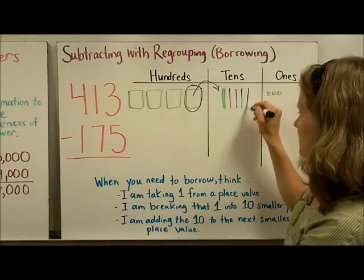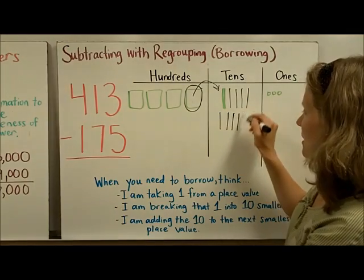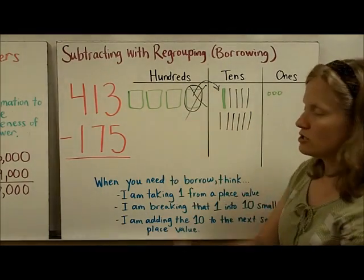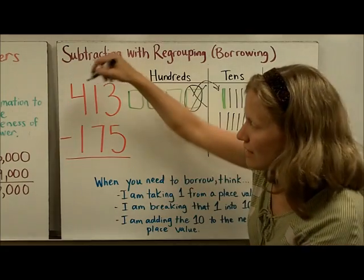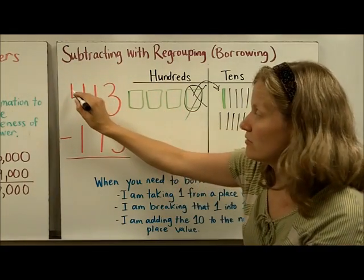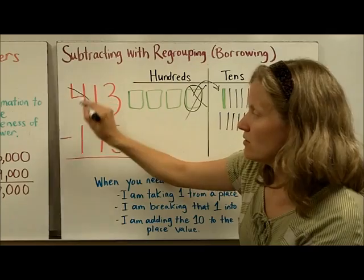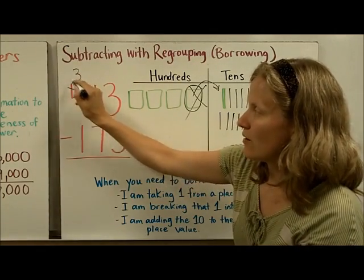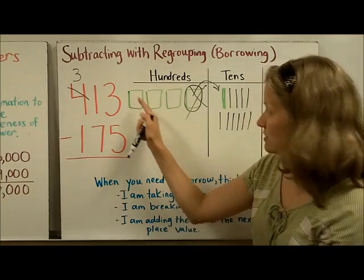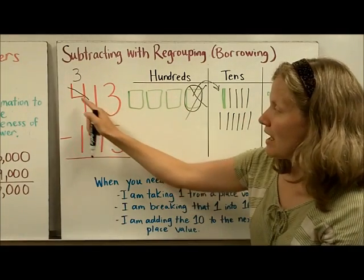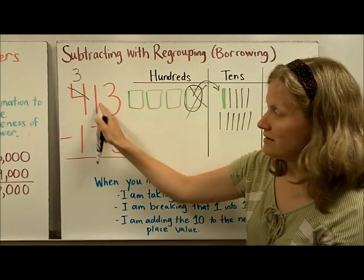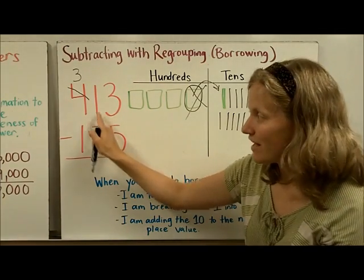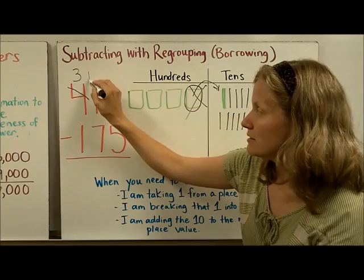And when I do that, it's going to turn into ten tens. So I took that hundred away and turned it into ten tens. So you show that in the subtraction algorithm by taking away a hundred, so now we went down to three hundreds. There they are. And I'm adding ten tens into the tens place. So I'm adding ten plus that one that's there, it's eleven.